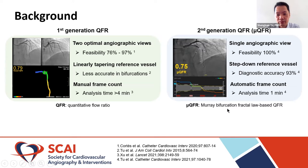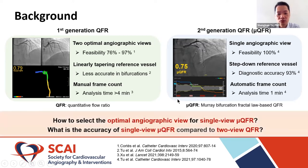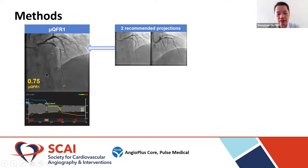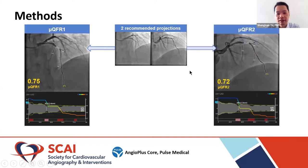There are two important questions we aimed to answer. First, how to select the optimal angiographic view for single-view new QFR calculation? Second, what is the accuracy of single-view new QFR compared to two-view QFR? For the methodology, from the FAVOR China study population, most patients were acquired with angiographic views according to protocol. We specified these as protocol-specified recommended views. From one of the protocol recommended views, we calculated new QFR — this is the first new QFR. From the second protocol recommended view, we calculated a second new QFR.